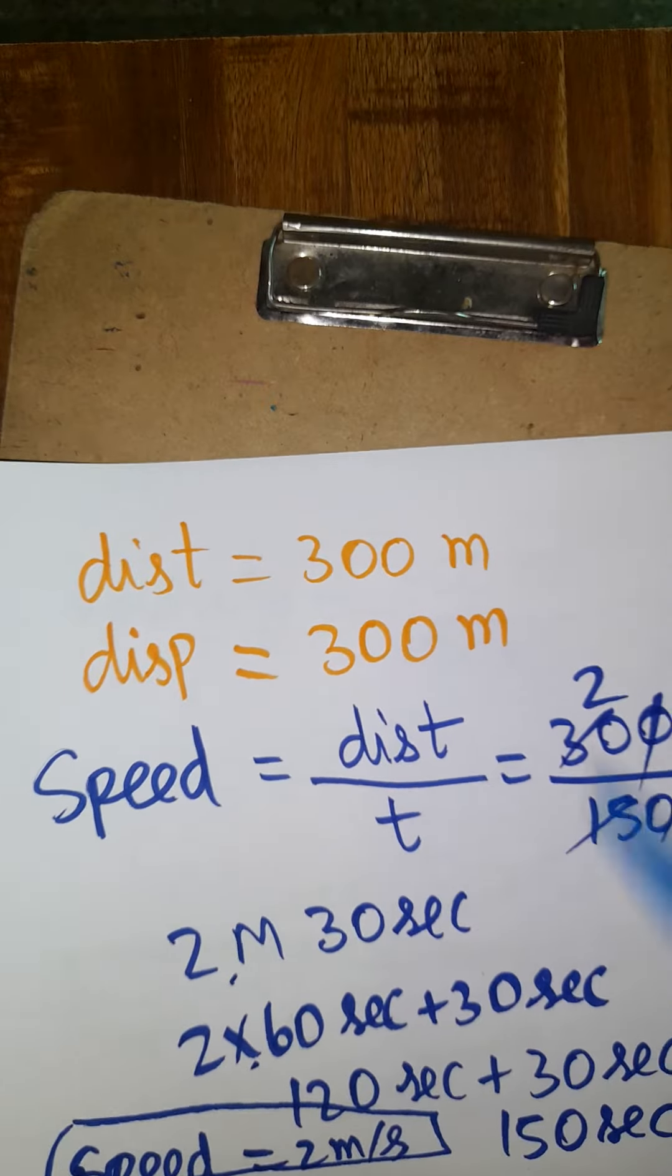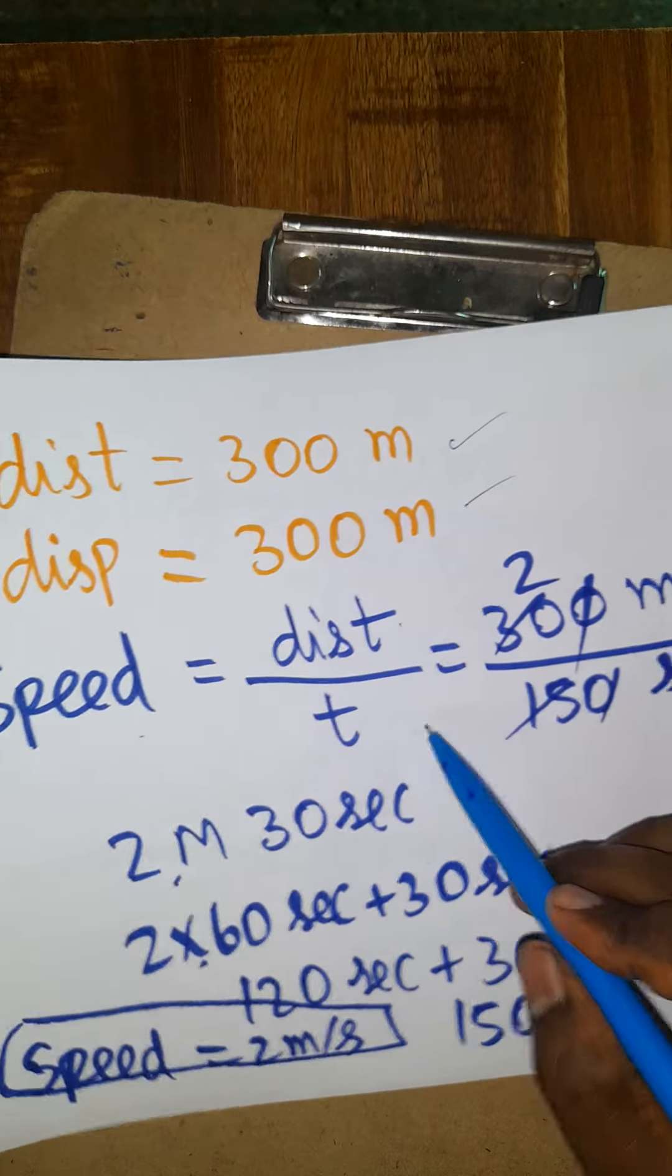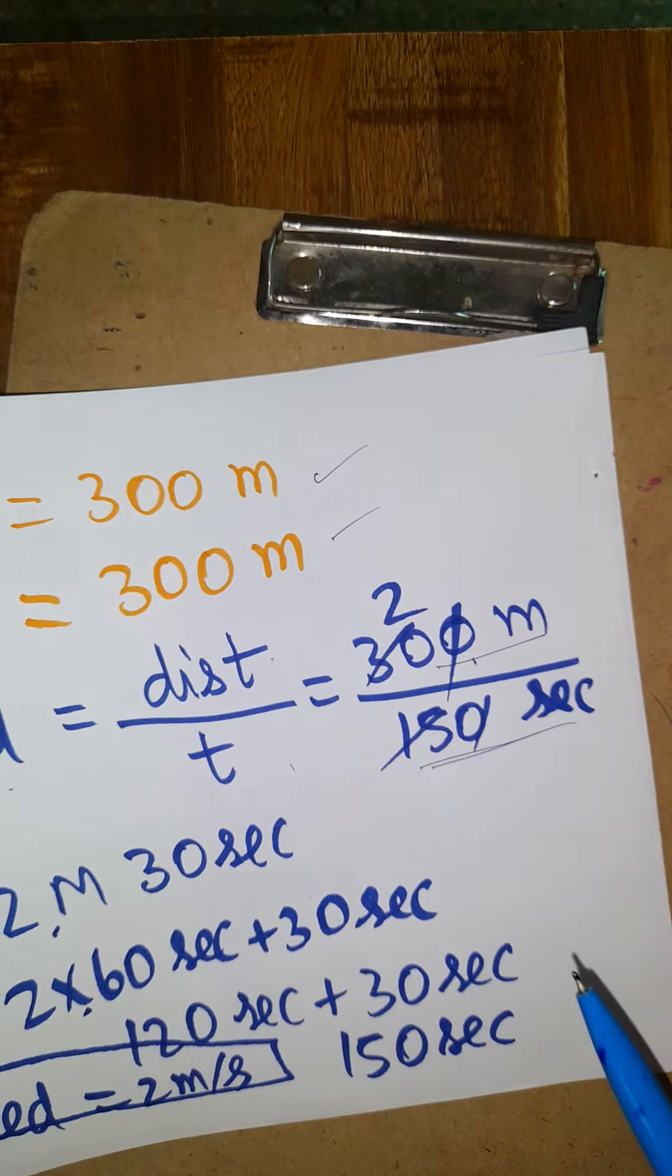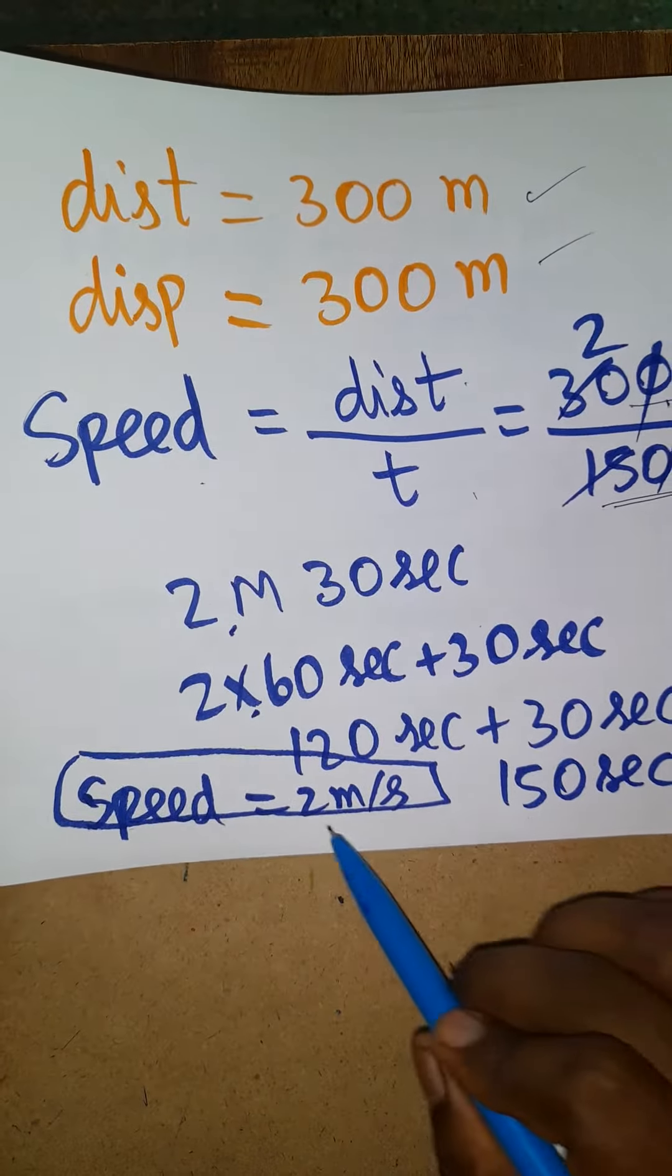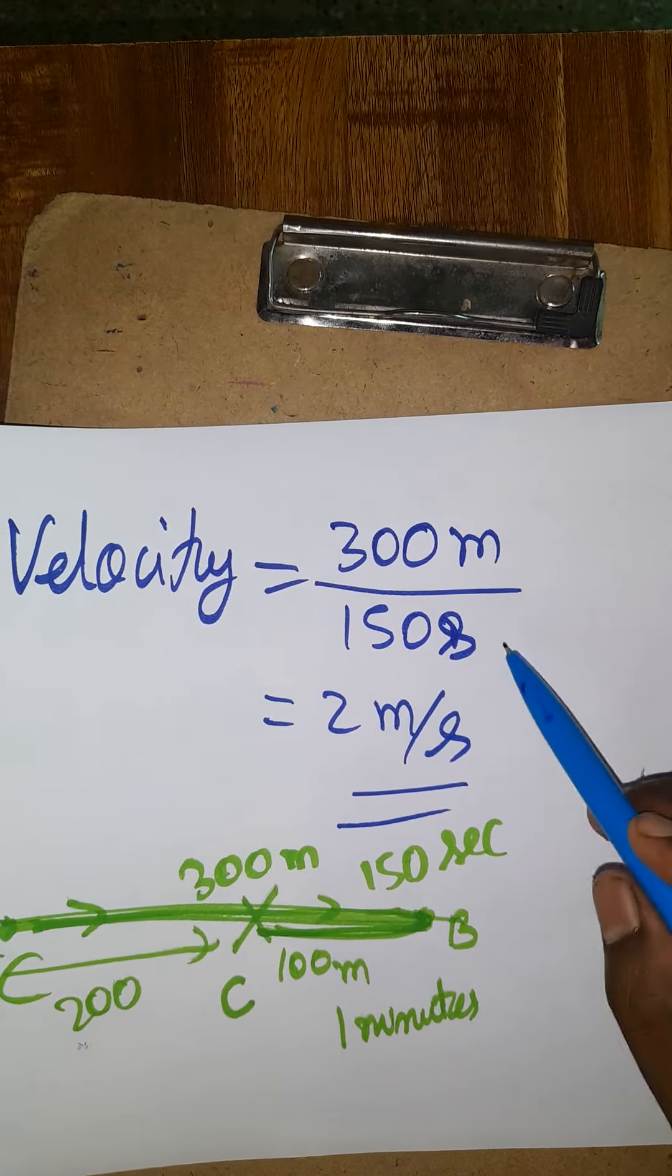Distance and displacement will be equal when the object is moving in a straight line. Speed equals distance by time: 300 meters divided by 150 seconds equals 2 meters per second. Similarly, speed and velocity will be equal when the object is moving in a straight line.